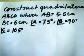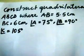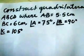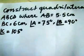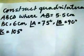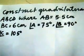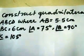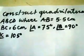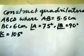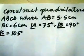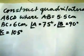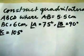Let us show you how to construct a quadrilateral ABCD where AB is equal to 5.5 cm, BC is equal to 6 cm, angle A is equal to 75 degrees, angle B is equal to 90 degrees, angle C is equal to 105 degrees.